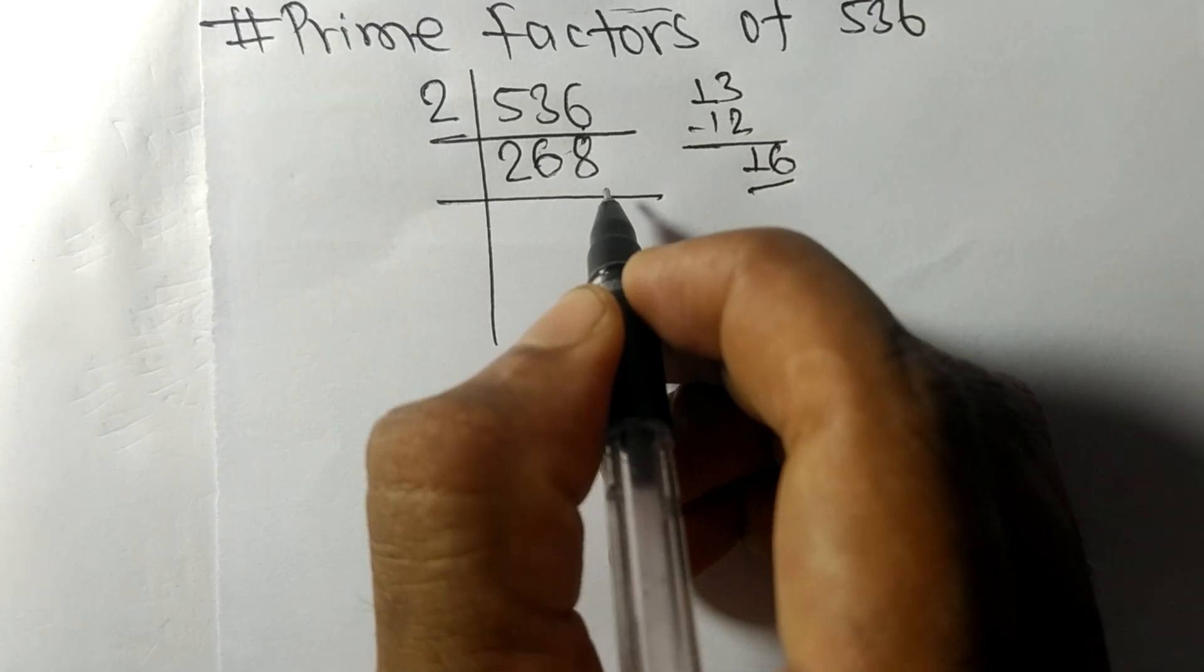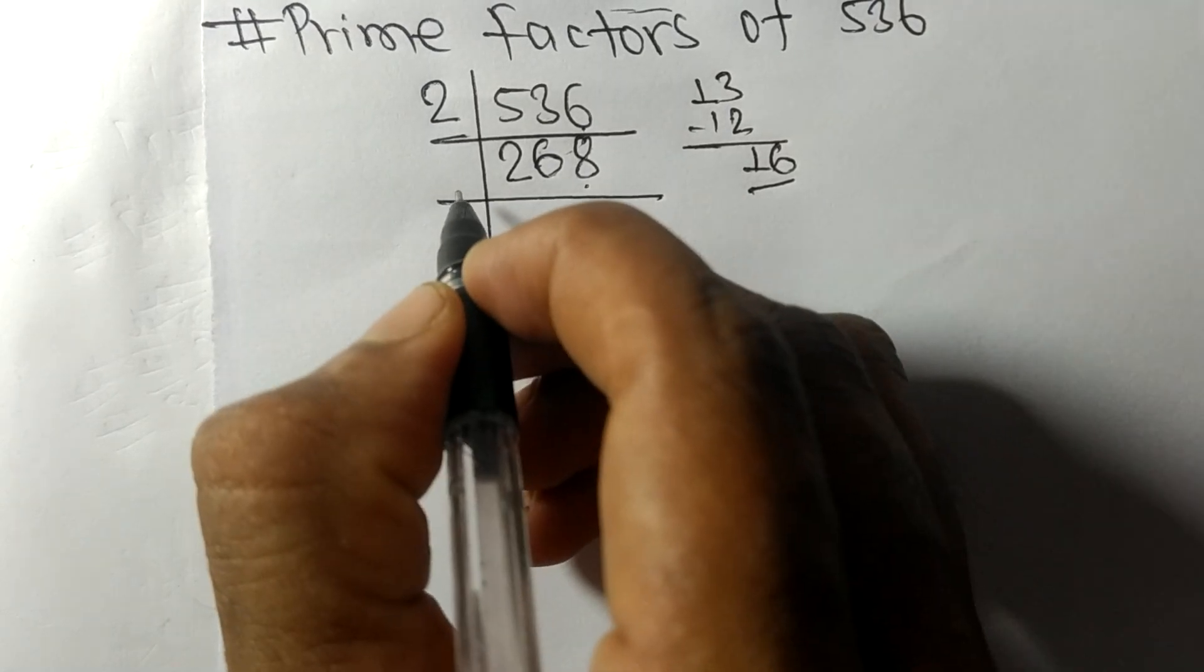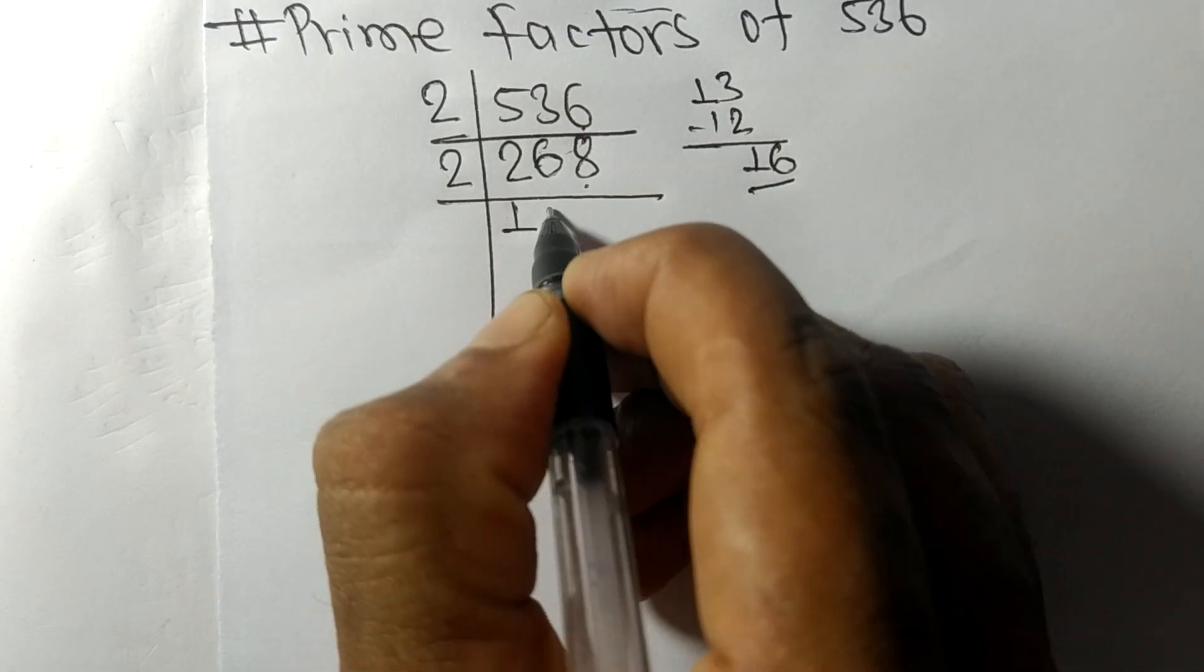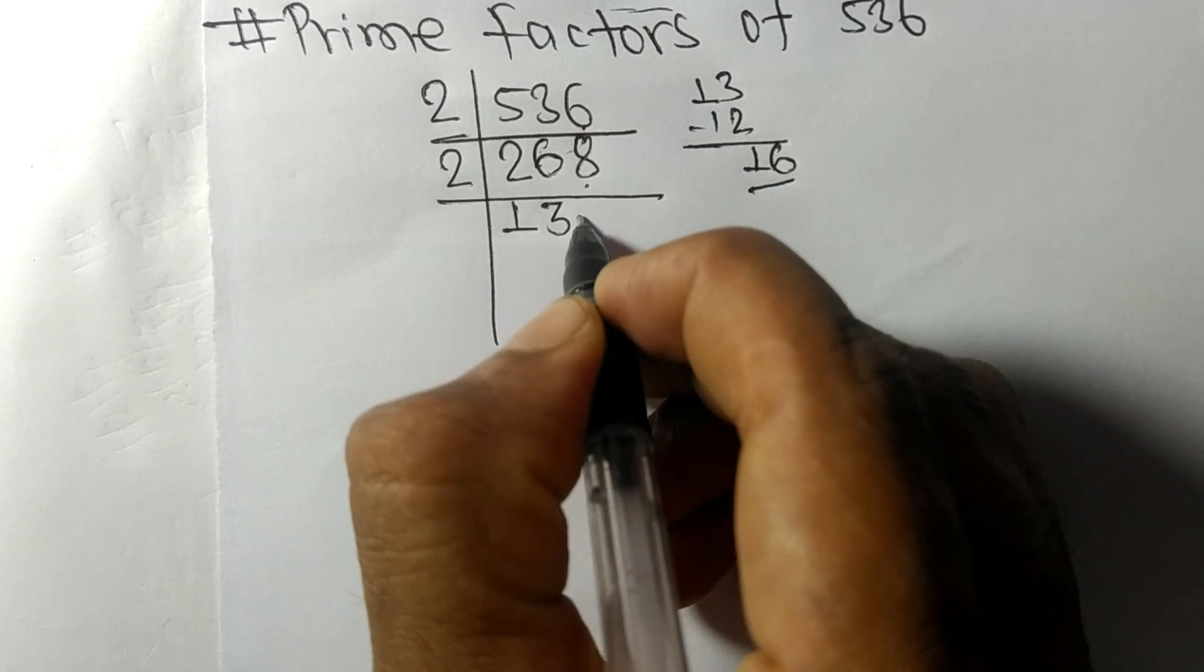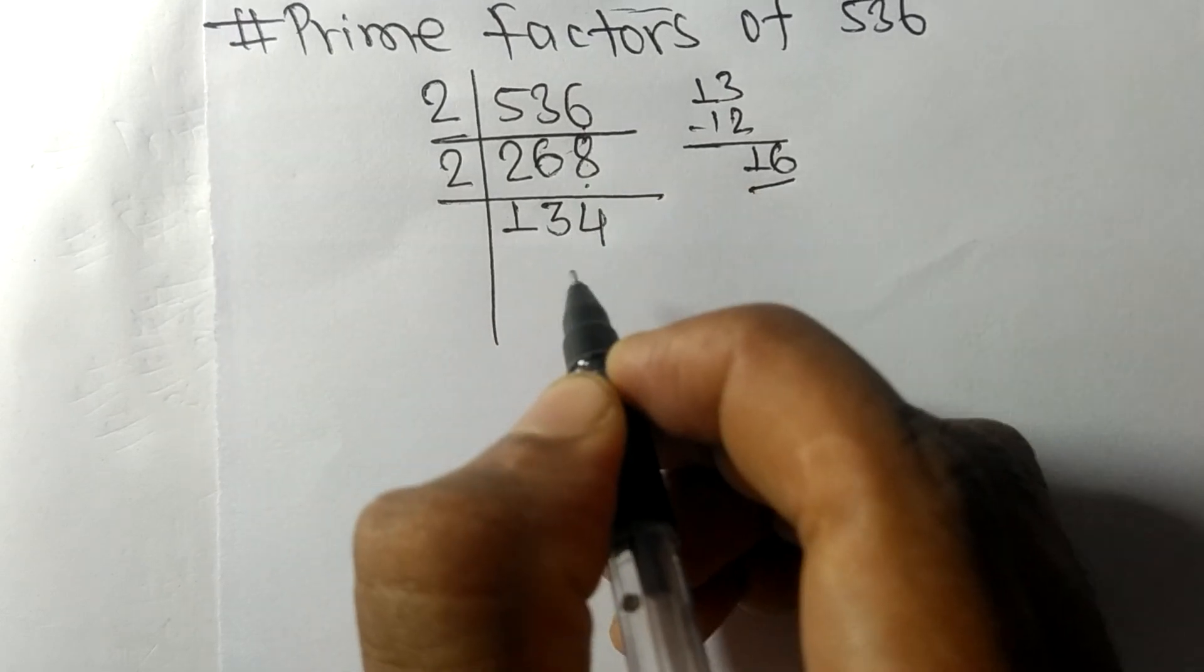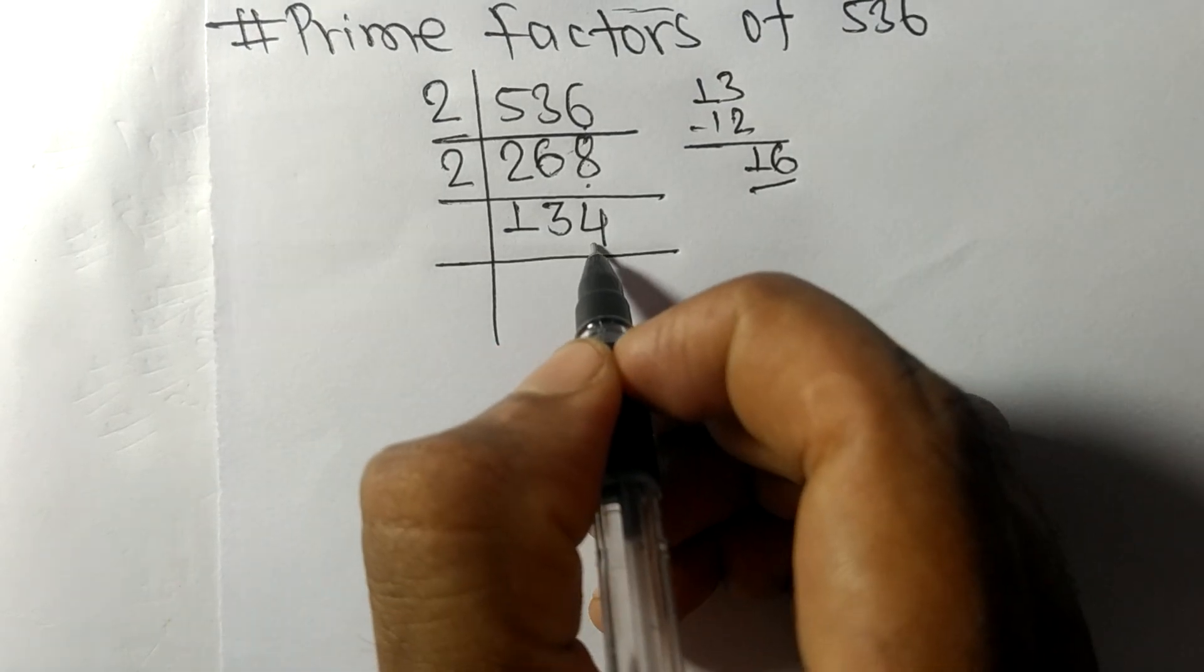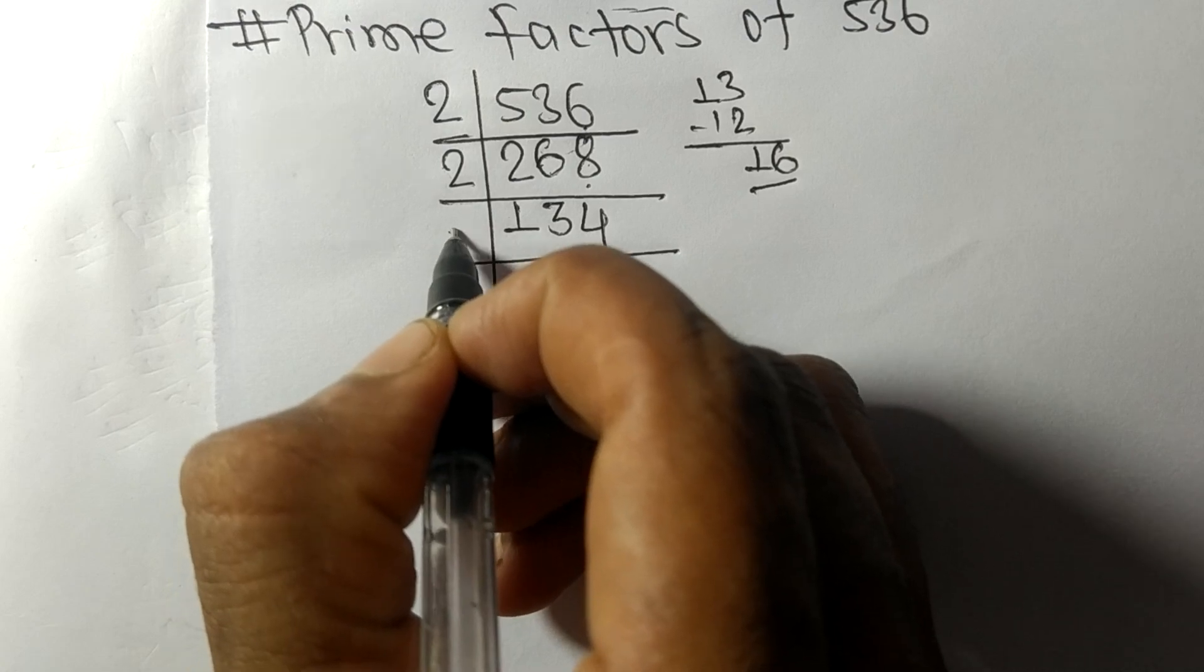Again we have an even number 8 at the end, so it is divisible by 2. 2 times 1 is 2, 2 times 3 is 6, 2 times 4 is 8.